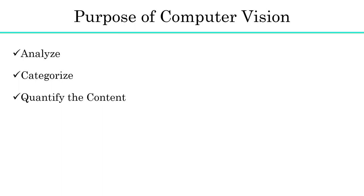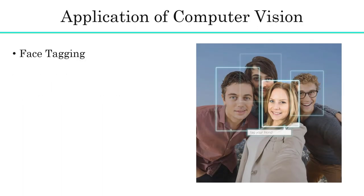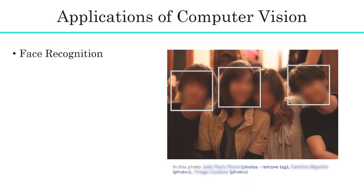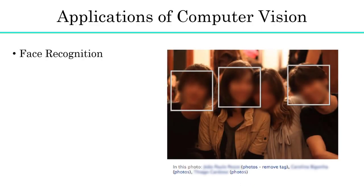There are countless applications of computer vision. For example, have you recently tagged a photo of yourself or a friend on Facebook? How does Facebook seem to know where the faces are in the images? Facebook has implemented a face recognition algorithm - they can not only find faces in an image, but also identify whose face it is. Face recognition is an application of computer vision in the real world.